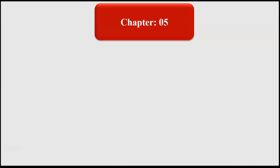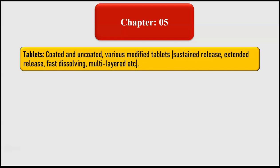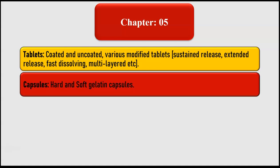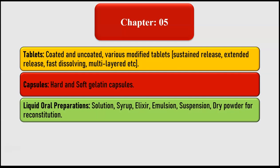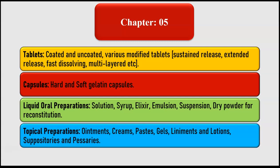Chapter five covers tablets — different coated and uncoated tablets, and various modified tablets such as sustained release, extended release, fast dissolving, and multi-layer. Then we will study capsules — hard and soft gelatin capsules. Next is liquid oral preparations: solutions, syrups, elixirs, emulsions, suspensions, and dry powders for reconstitution. Then topical preparations: ointments, creams, pastes, gels, liniments, lotions, suppositories, and pessaries.